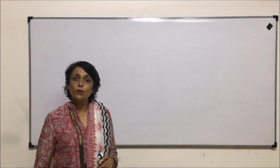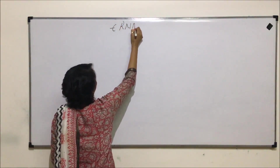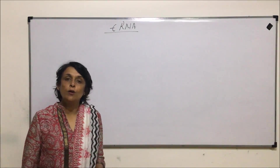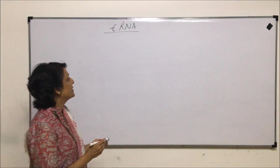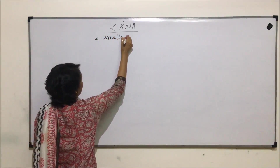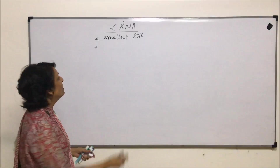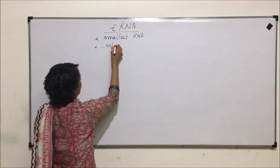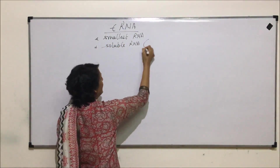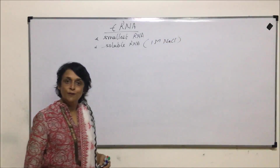In this video we'll be talking about the structure of tRNA, that is transfer RNA. As the name tells us, they help in transporting or transfer of amino acids. tRNA is the smallest RNA and it is also known as soluble RNA, because it dissolves in 1M NaCl solution.